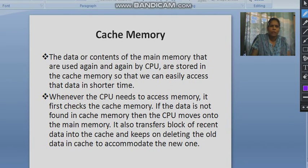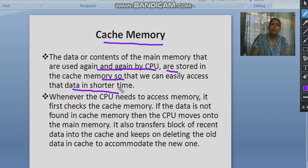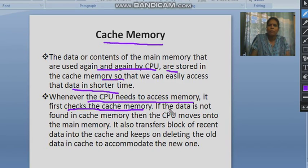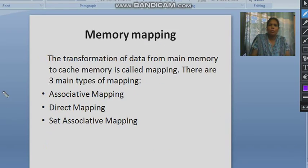Now in the next slide, cache memory. The basic concept of cache is that data or contents of the main memory that are used again and again by the CPU are stored in the cache memory. This requires a very short period of time compared to the main memory because the contents are readily available in cache. If not readily available in cache, we need to go to the main memory. When the CPU needs to access memory, it first checks the cache; if the data is not found there, the CPU moves to the main memory.